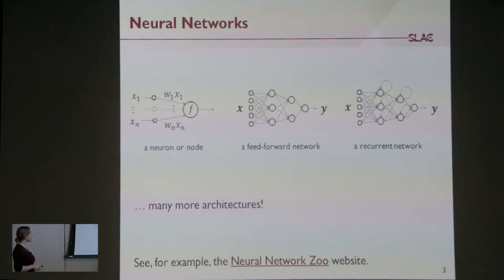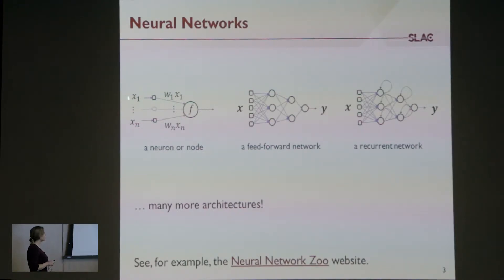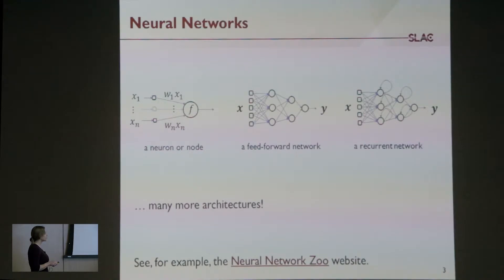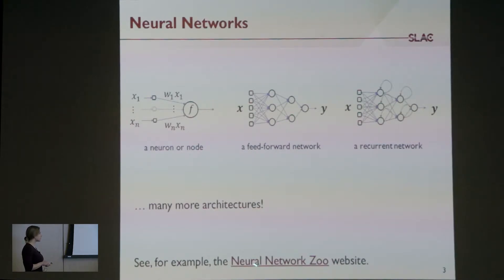For neural networks specifically: in essence, all you're doing is stringing together lots of processing functions parameterized by weights. Inputs get sent to a function, a weight modifies the input, and you put many of these things together. You end up with a feed-forward network when going straight from input to output. If you make other kinds of connections, like connecting a node back on itself, you end up with a recurrent neural network. There are a lot of architectures — the Neural Network Zoo website has many examples in a nice graphical form.